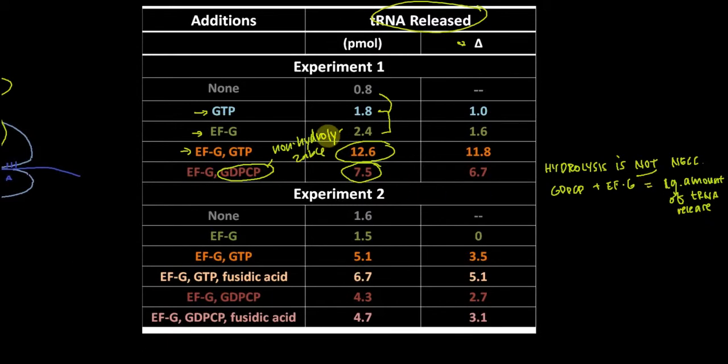You might notice that maybe there's something about GTP that's a little bit better than GDPCP, because with GTP we see a little bit more tRNA release. Even though you can't conclude what I'm about to tell you from this data, it's interesting. The reason you see a little increase with GTP is because GTP can actually be catalytic. The EFG-GTP complex can be recycled, which results in a little more tRNA being released. But you can't conclude that GTP and EFG gets recycled from strictly these data.